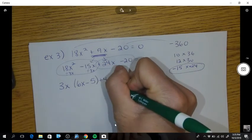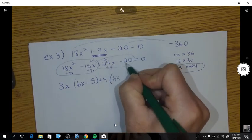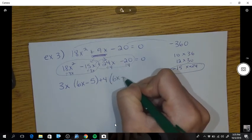Take the second group. What is the most you could divide out of both of those terms? That should be 4. And it's a positive 4 we're going to take out. So if you divide by 4, you get 6x. If you divide by 4, you get minus 5.